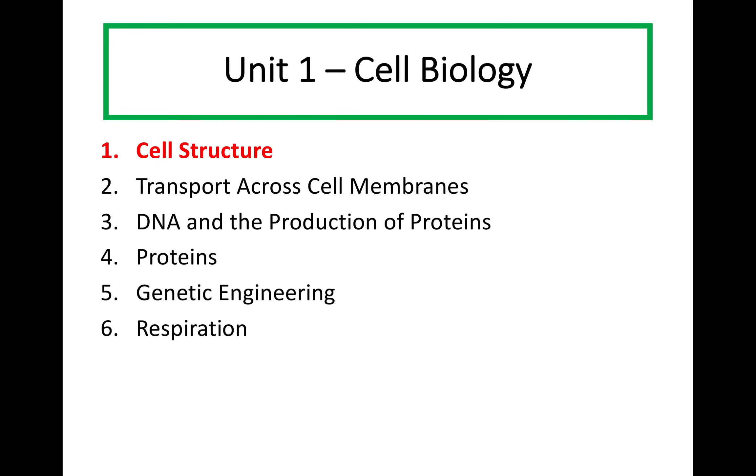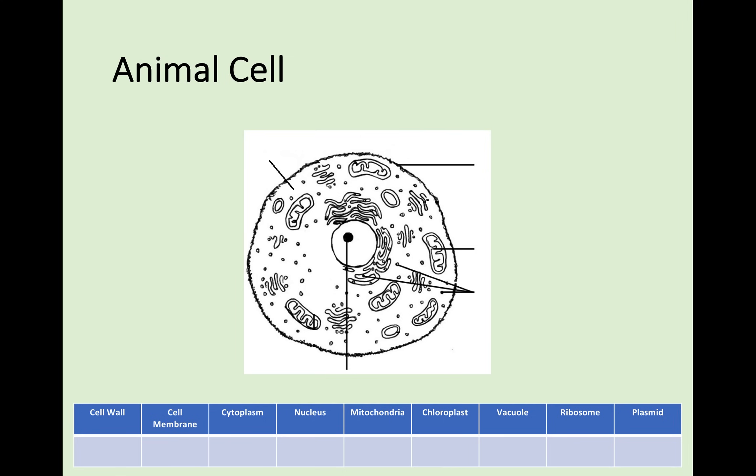This has a look at 4 different types of cells, what they have inside them, what the function of these are, and we will compare the 4 cells as well. In National 5 Biology you can be asked to compare or state the organelles present in 4 types of cells: animal cells, plant cells, bacterial cells, and fungal cells. So we are going to start off by looking at the structure of an animal cell.